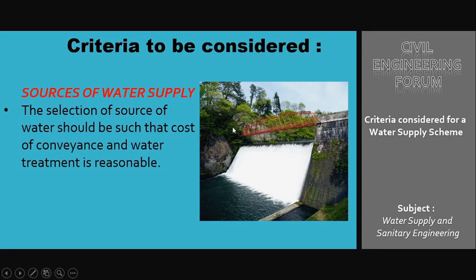The next criteria is the source of water supply. The selection of the source of water supply should be such that the cost of conveyance and water treatment is reasonable. The cost of the water supply scheme depends on the selection of the site for the source of water, so we select a site where the conveyance and treatment of water will be reasonable.